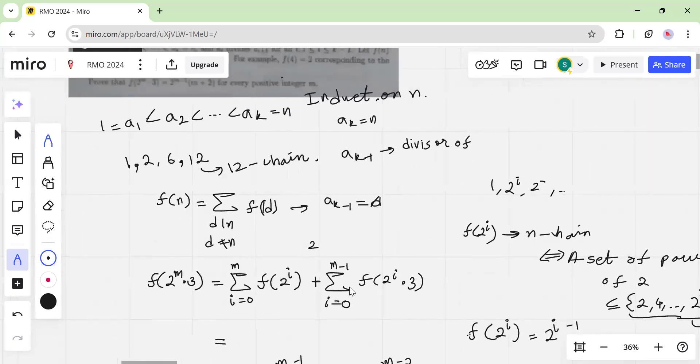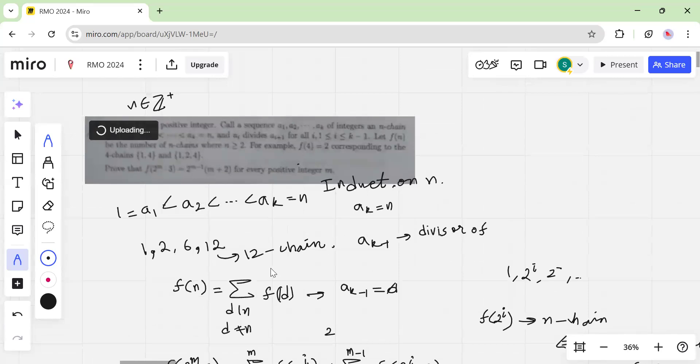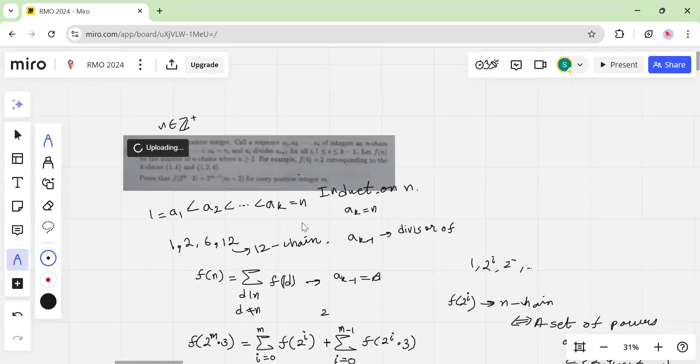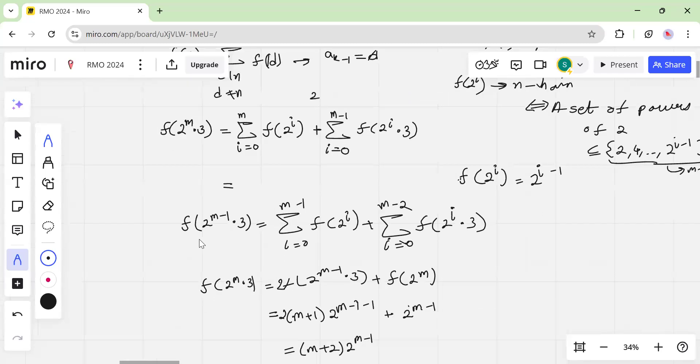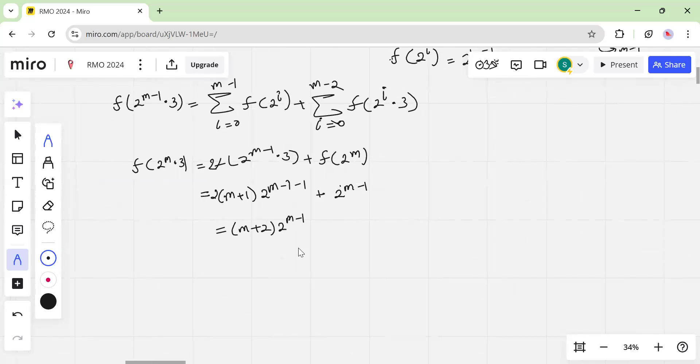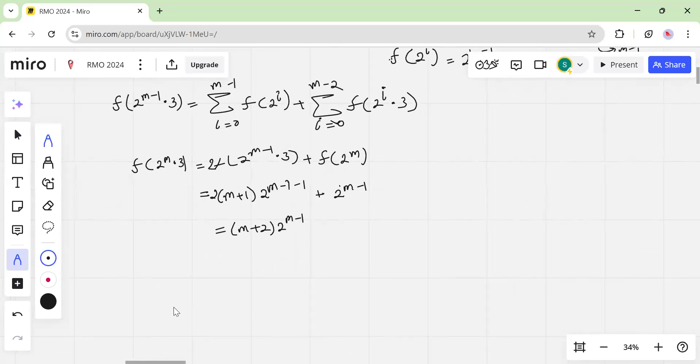Because, so again, to repeat, we mostly did, the key idea was to induct and then you get the summation and you notice how similar it is to the summation for 2 to the m minus 1. And then it's just a bunch of algebra. Okay, thank you. So, I need to draw the box.